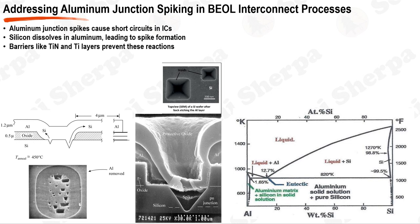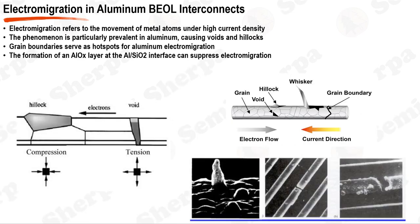Another promising approach involves changing the material structure from Si/Al to Si/silicide/barrier metal/tungsten. This configuration mitigates junction spiking thanks to the different diffusion characteristics of silicide compared to silicon. In the BEOL processes of semiconductor manufacturing, aluminum has been a key material in interconnect technology due to its excellent electrical conductivity, but aluminum interconnects suffer from electromigration — the displacement of aluminum atoms under the influence of an electric field driven by momentum transfer from conducting electrons under high current densities.